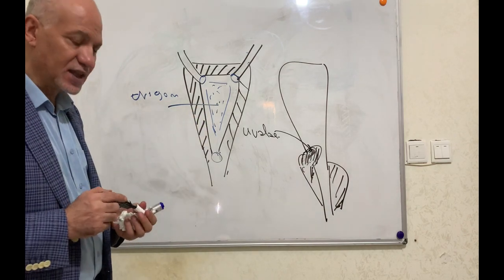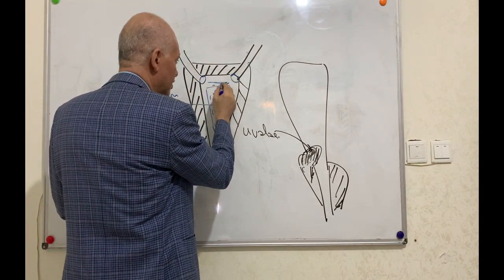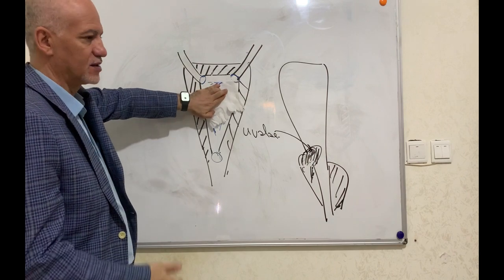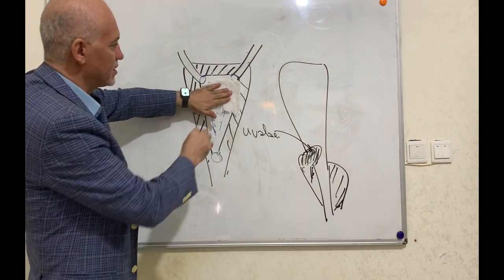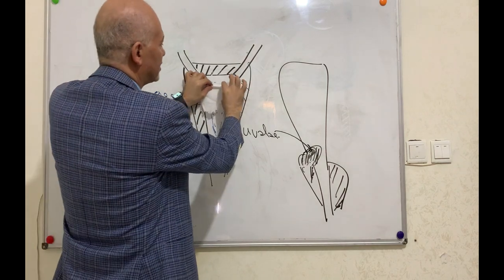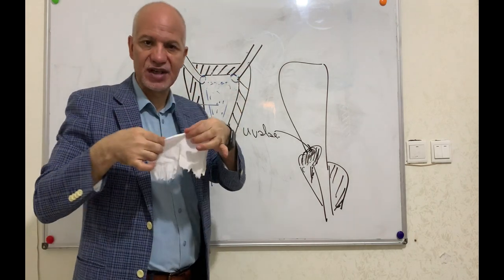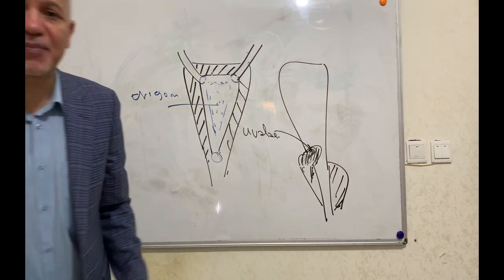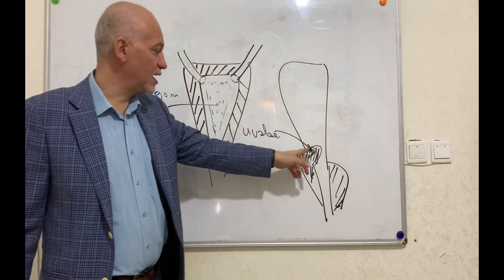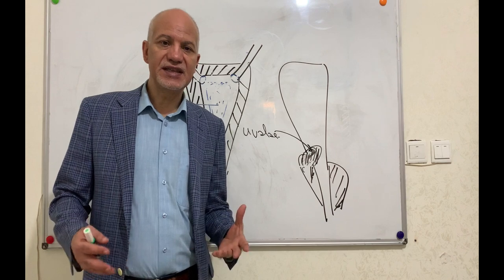Also in the internal structure: the mucous membrane covering the base of the bladder from inside has an elevated ridge between the two ureteric openings called the interureteric crest. The main features of the interior of the urinary bladder are: the two ureteric openings, the trigon, the interureteric crest, and the uvula vesicae.